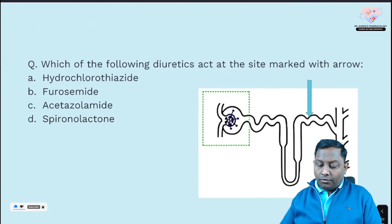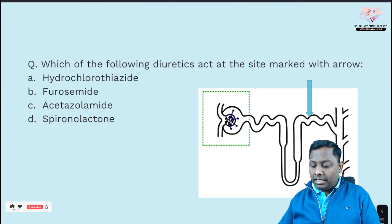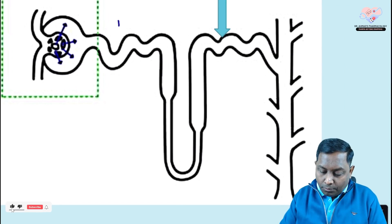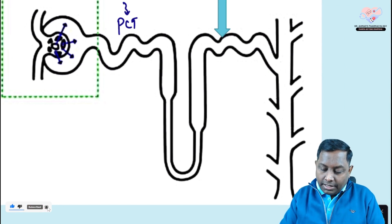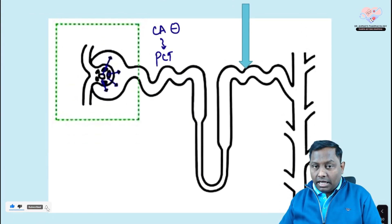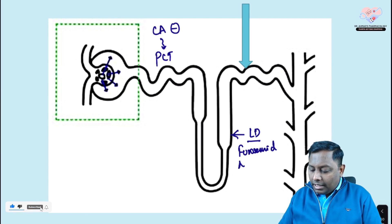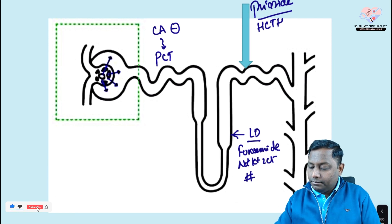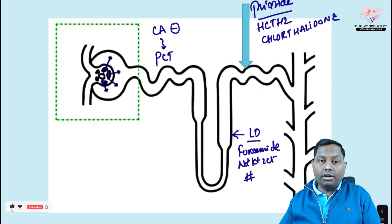Fourth question: which of the following diuretics acts at the marked site? Looking at the image showing the nephron, we have: the proximal convoluted tubule where carbonic anhydrase inhibitors like acetazolamide and dorzolamide act; the thick ascending limb of the loop of Henle where loop diuretics like furosemide and torsemide act, by inhibiting the Na-K-2Cl cotransporter; and the distal convoluted tubule where thiazide diuretics like hydrochlorothiazide and chlorthalidone act, by inhibiting the NaCl cotransporter.